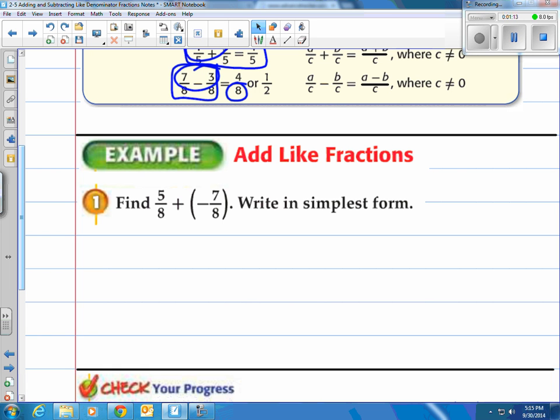Let's add 5 eighths plus negative 7 eighths and write it in simplest form. Well, step one is we know that we're going to keep the bottom the same. Then all we have to do is take the tops and add them together. Now, notice how they gave you a negative 7 eighths. That negative goes to the top. So make it the negative. I'm going to put it up on top there. Get rid of it down here. Make sure that any negative sign goes to the top of the fraction. Now, put those together. 5 and negative 7 make negative 2. That's all over 8 still.